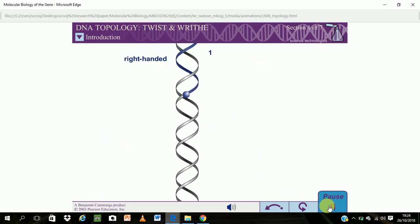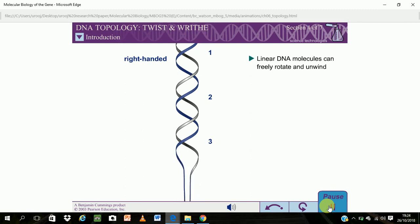Each of the chromosomes of eukaryotes is comprised of a single linear DNA molecule. Because their ends are free, linear DNA molecules can freely rotate to change the number of times the two chains of the double helix coil about one another.